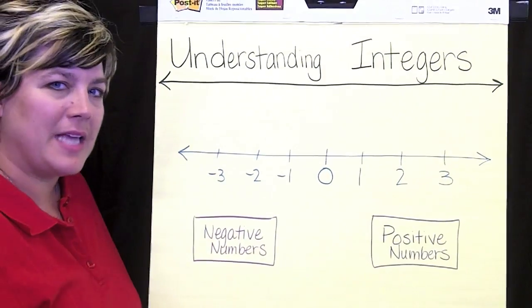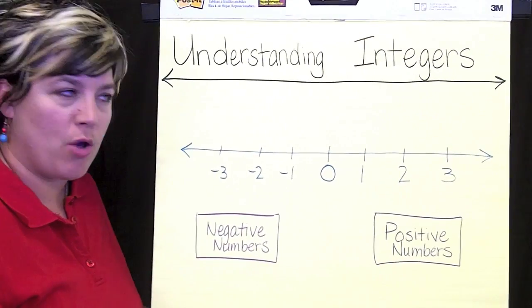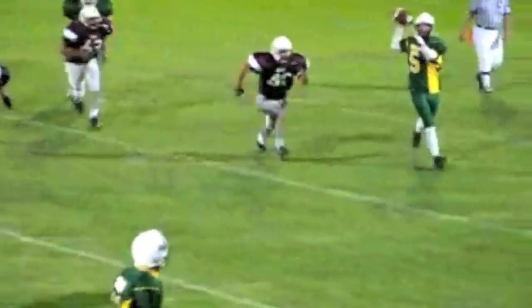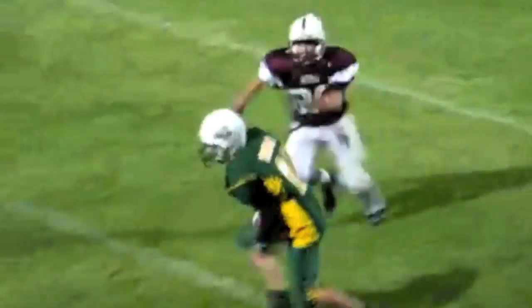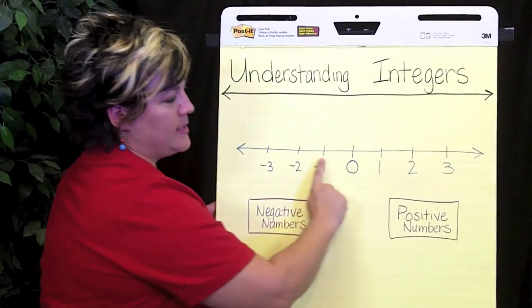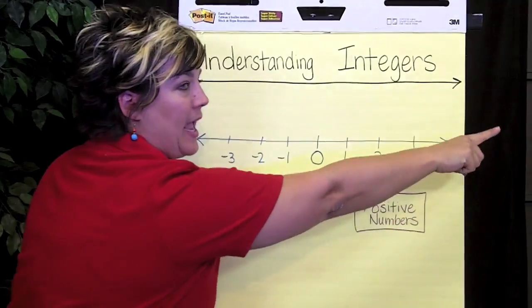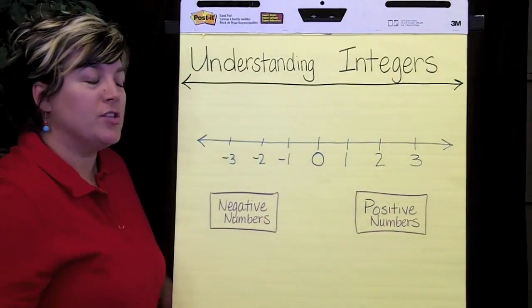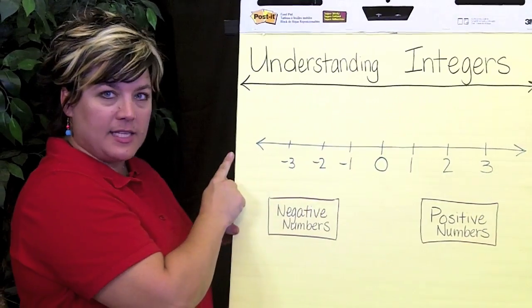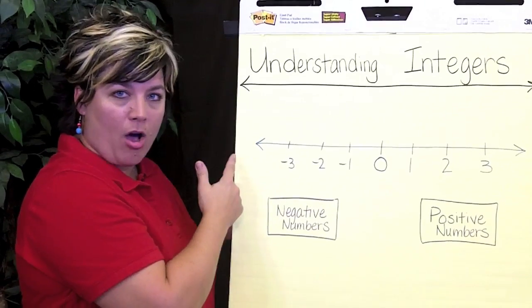Let me give you an example about why we would even need to know this. Let's say you're at your son's football game, and the quarterback throws the ball, and the guy downfield catches the ball, and they gain 20 yards — we would say he had a positive gain of 20 yards. Then on the next play, the quarterback gets sacked, and they lose 10 yards — we would say he had a negative 10 loss.